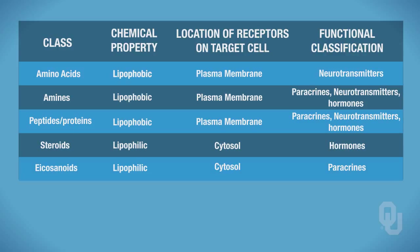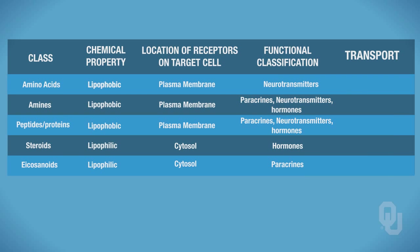What I would suggest doing now is adding in a column header for transport. How your chemical messenger, how your ligand is being transported, is dependent upon the chemical property. So whether your ligand is lipophobic or lipophilic will determine how it's transported.